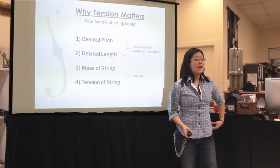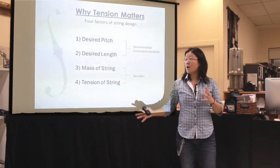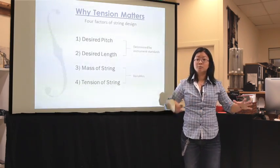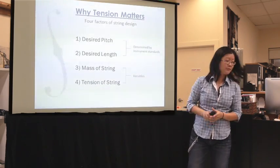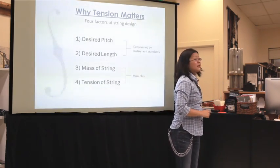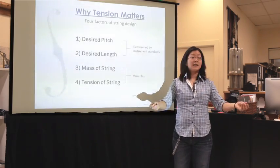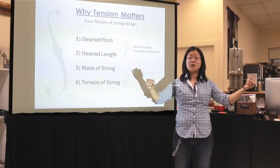What we can change are the mass of the string and the tension of the string — that's where the string maker can really experiment. If I have a string vibrating at a C note and I add mass to this string without changing anything else, the pitch goes down, because a bigger mass vibrating makes a lower pitch.